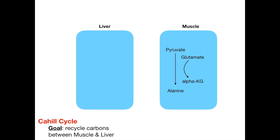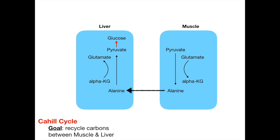Once you have the alanine, it can go from the muscle into the liver. Alanine, once in the liver, can be converted back into pyruvate using alpha-ketoglutarate and spitting off glutamate — the same reaction as in the muscle, just backwards. Once we have the pyruvate back in the liver, we need to get it back to the muscle. Since pyruvate cannot jump from liver to muscle, in the Cahill cycle we use gluconeogenesis to go from pyruvate up to glucose, and then glucose can jump from the liver to the muscle, where glycolysis converts glucose back down to pyruvate.